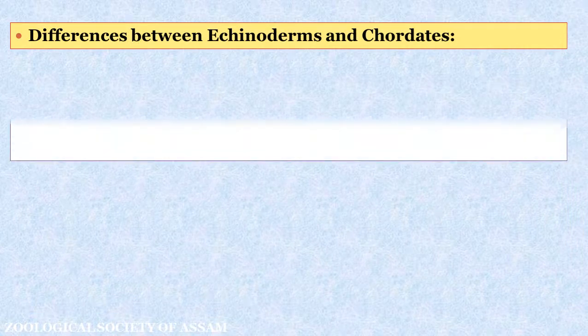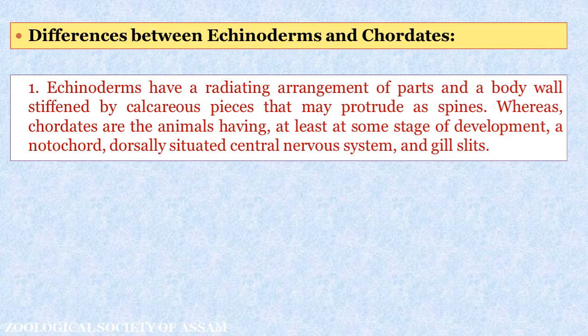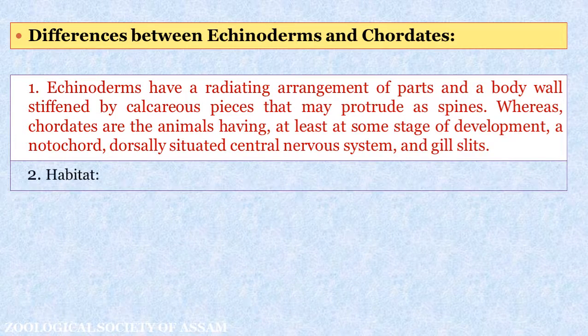Differences between Echinoderms and Chordates: Echinoderms have a radiating arrangement of parts and a body wall stiffened by calcareous ossicles that may protrude as edge spines. Whereas Chordates are animals having, at least at some stage of development, a notochord, a dorsally situated central nervous system, and gill slits. Regarding differences in habitat, Echinoderms exclusively live in marine habitats while Chordates live in all biomes.